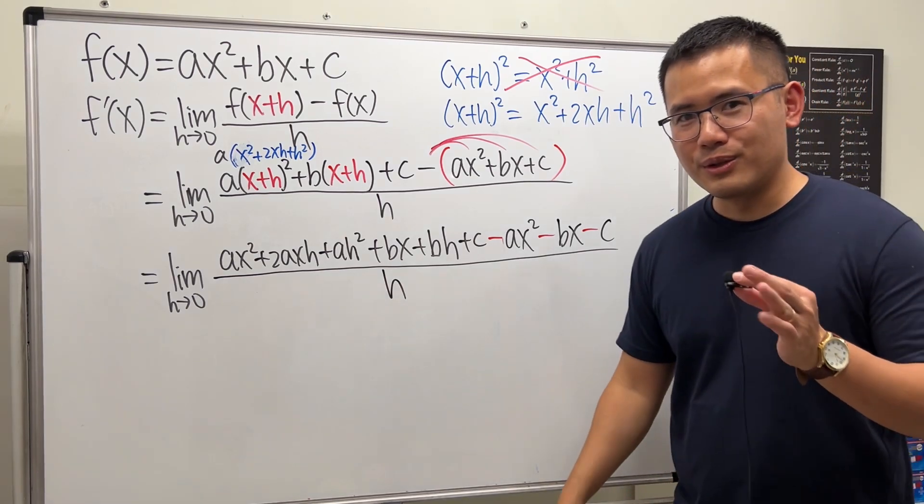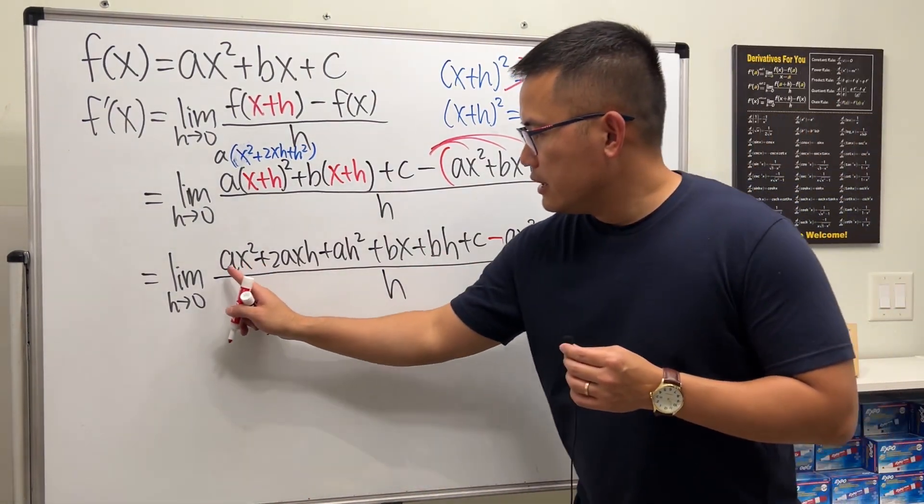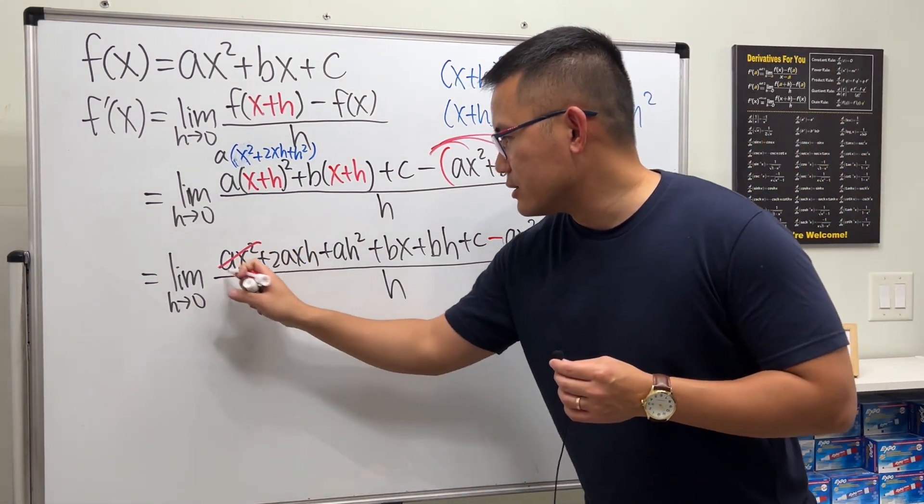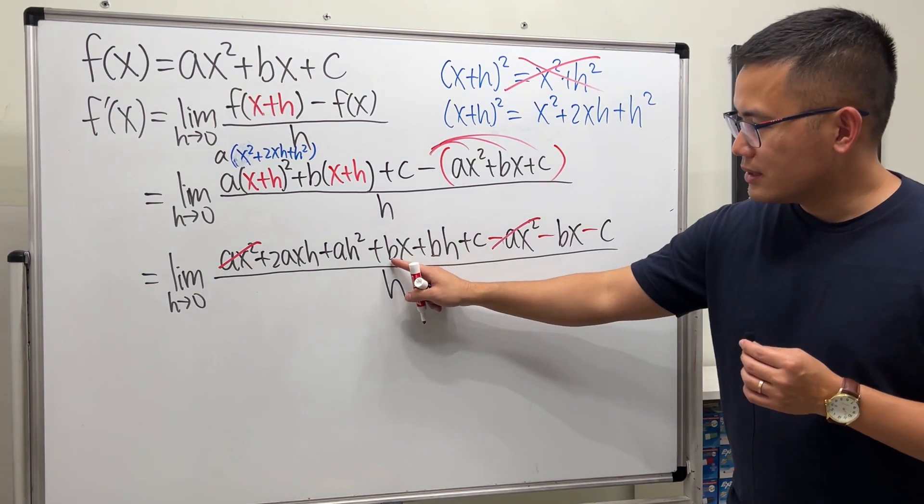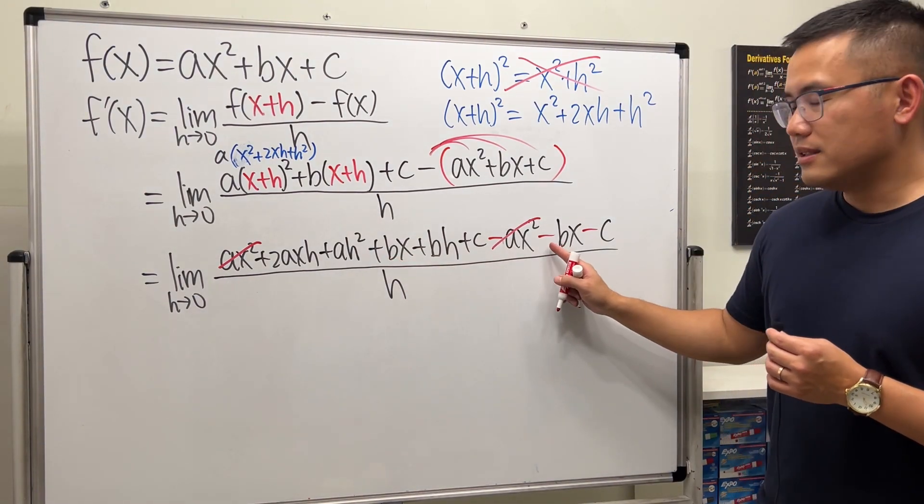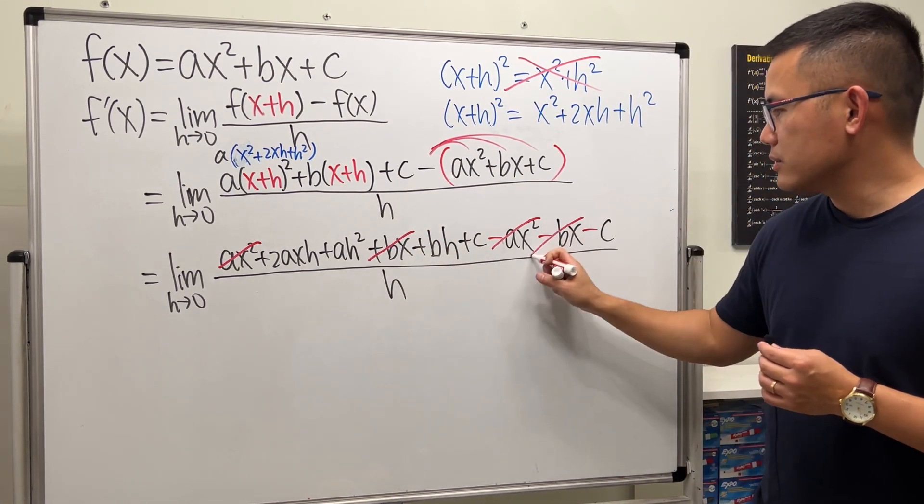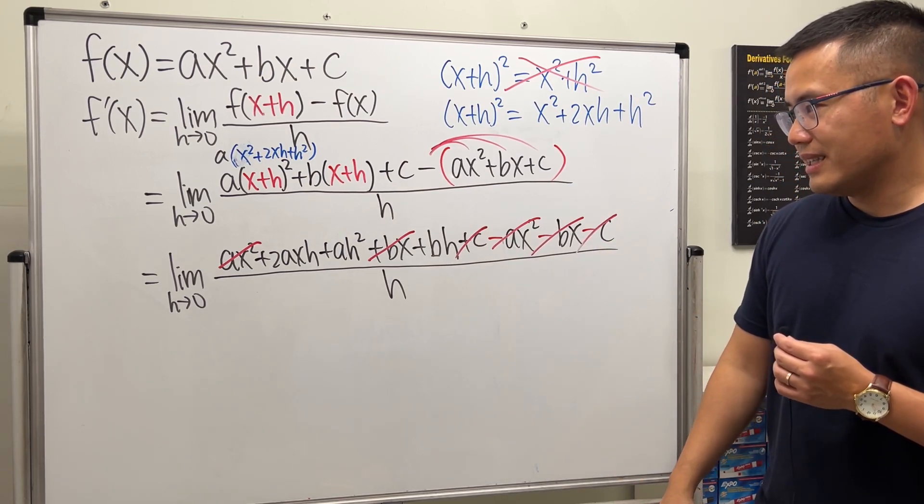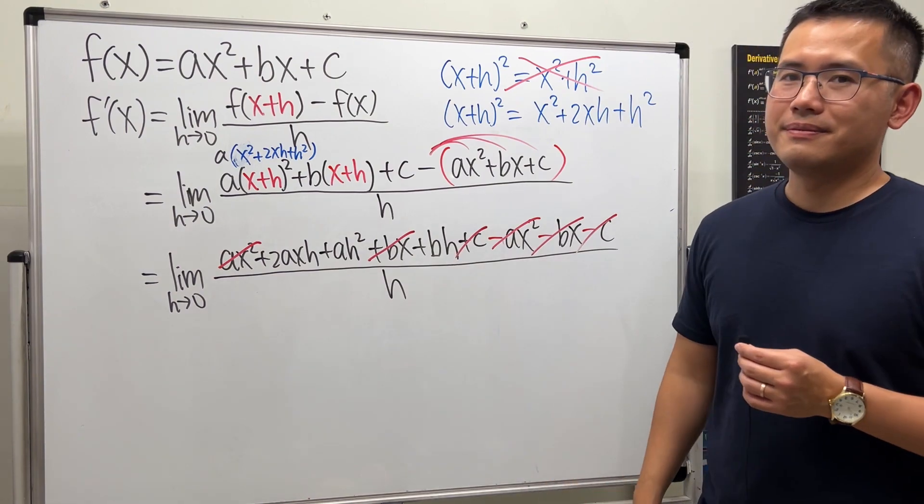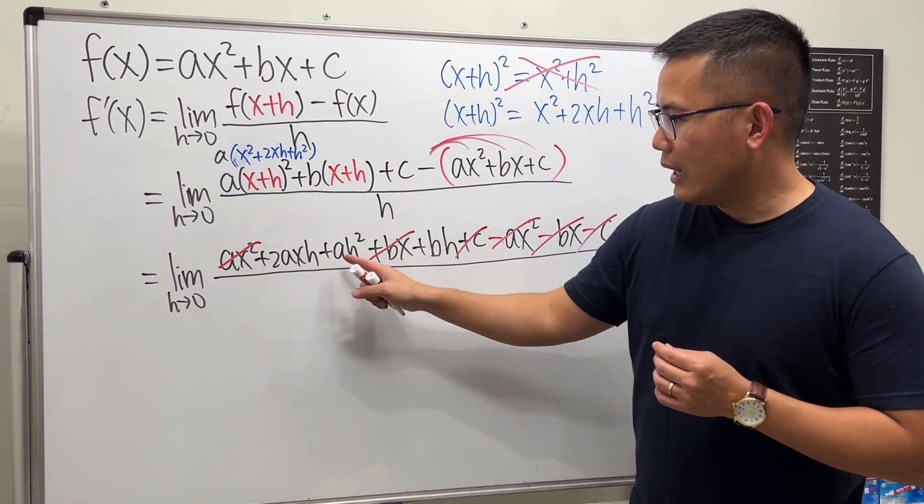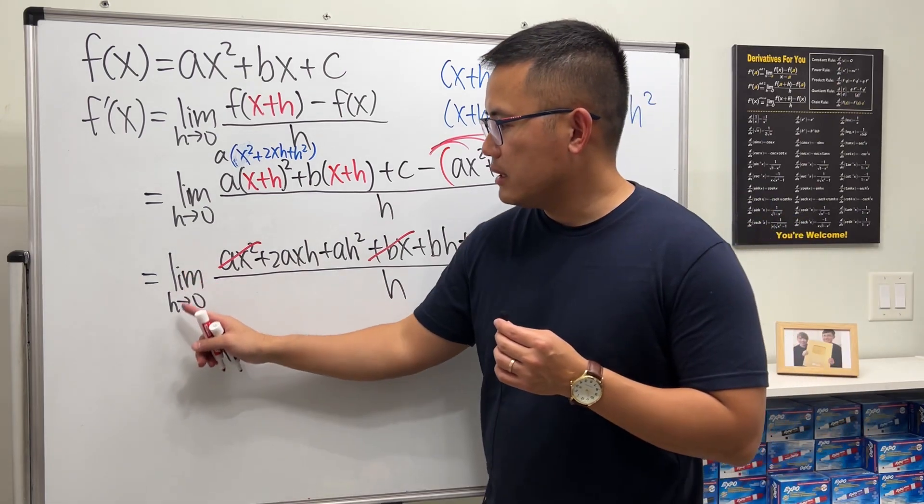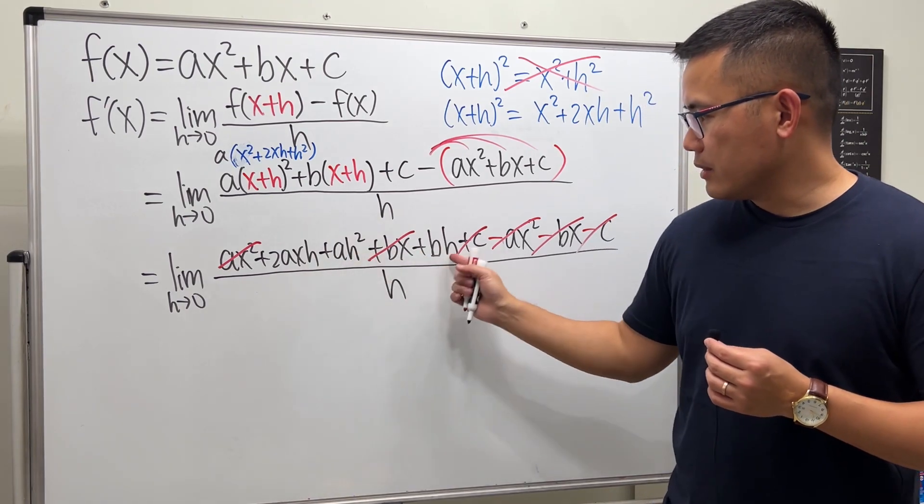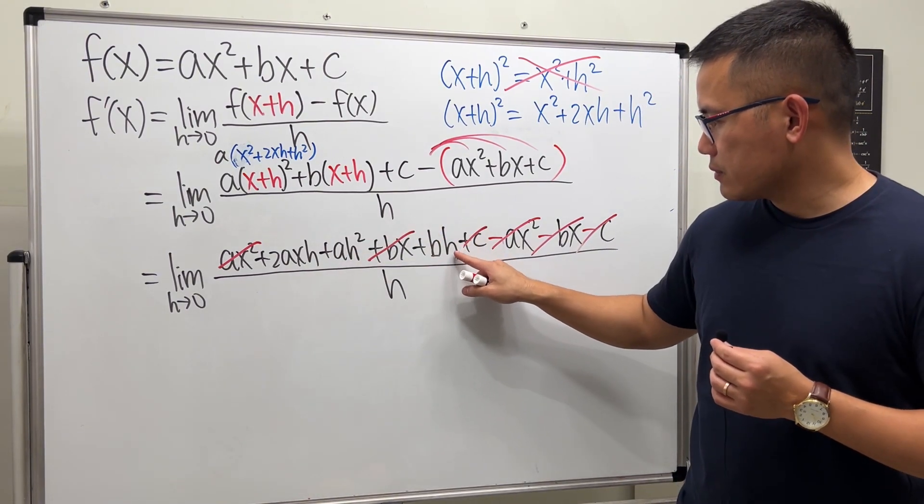All divided by h. But right now, it's going to get shorter. Have a look. This is positive ax squared, and we have a minus ax squared, so cancel. Next, we notice we have a positive bx right here and this is the minus bx, so this and that cancel. Lastly, we have this c and that c also got canceled. So we have this, this, and that left. Notice, they all have an h. When limit as h approaching 0, the h should get canceled, right? Let's go ahead and factor out the common factor h on the top.